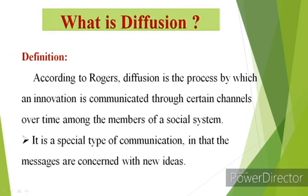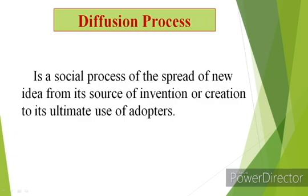Here, four points should be considered: first is innovation, second is communication through channels, third is over time, and fourth is members of a social system. Any new idea or new practice is communicated through certain channels — individual contact method, group contact method, mass contact method, interpersonal communication — over time, among the members of that particular social system. Diffusion is a special type of communication in which messages are concerned with new ideas.